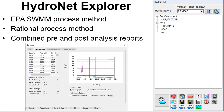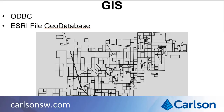HydroNet Explorer added processing methods for EPA SWMM and Rational, and the reporting supports combining the pre- and post-development results.